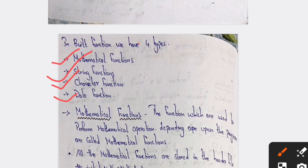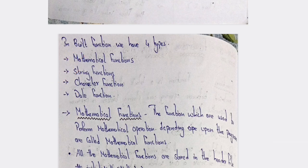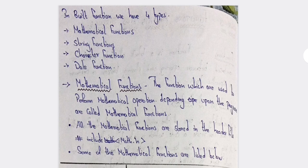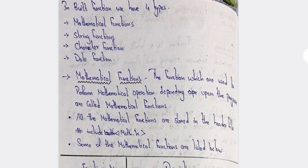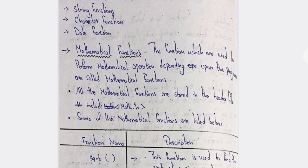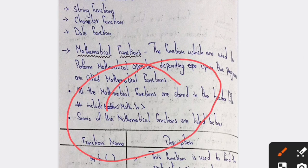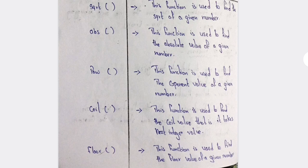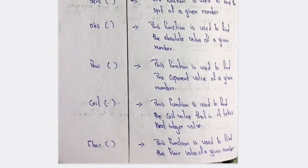In built-in functions you will have four types: mathematical function, date and time function, character function, and string function. In mathematical functions we perform mathematical calculations like addition, subtraction, and similar operations. No need to remember all these things — I'm just giving the topic introduction so you can write the theory on your own.